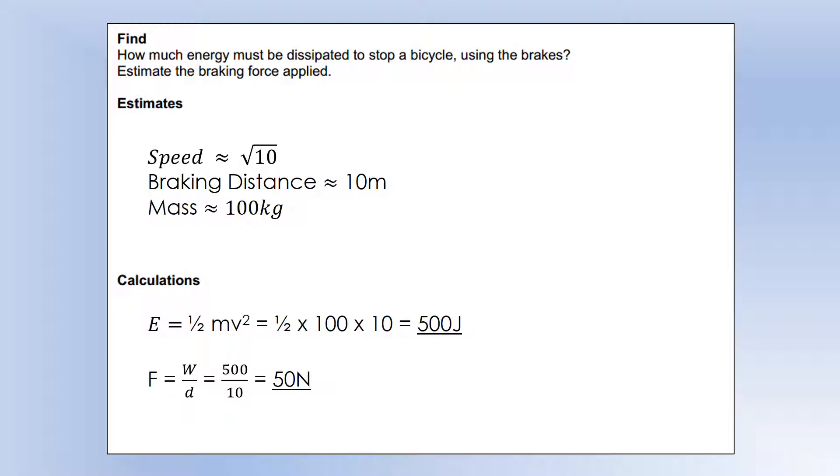So in terms of the kinetic energy that it has, doing half mv squared, this is why I pick root 10, so when we square it we just get 10. So it starts with 500 joules of kinetic energy, so we must dissipate 500 joules of energy.